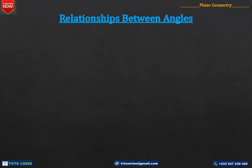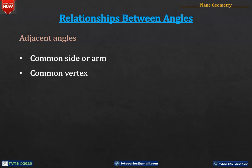The first type is adjacent angles. Two angles are said to be adjacent to each other if they have a common side or arm and a common vertex and do not overlap.